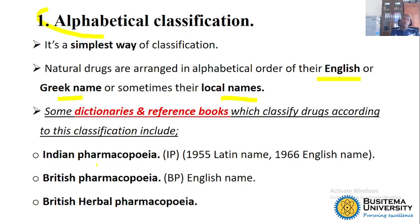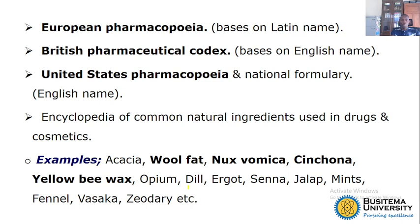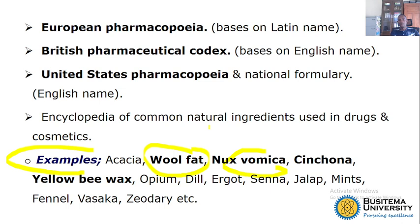We have examples such as the Indian Pharmacopoeia, whereby they used to classify using Latin names, then later turned to using English names from 1966 up to now. Then we have the British Pharmacopoeia where they use the English name. The European Pharmacopoeia also depends on Latin and English. The US Pharmacopoeia depends on English. For example, if you say 'wolf's bane,' that is an English name — you have used the English name to classify it. If you say 'Nux vomica,' that is a Latin name, and so you have classified it using the Latin way.